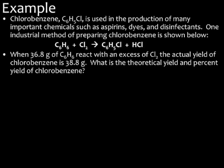So let's look at an example problem so we can see how all of these things work together. So here's our example. So it says we have chlorobenzene, which is C6H5Cl, is used for a lot of different things like aspirins, dyes, disinfectants, those types of things. One way of producing chlorobenzene is in this reaction given below. So chlorobenzene is this substance right here. So this is chlorobenzene. So this is what we're producing. To do that, you react C6H6, which is benzene, and chlorine gas. So that's one way to produce it.